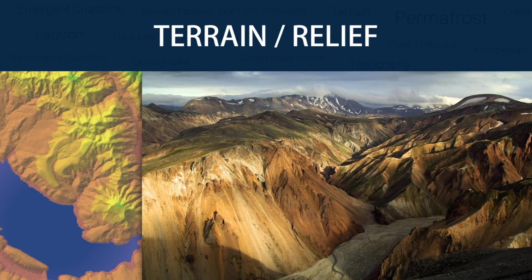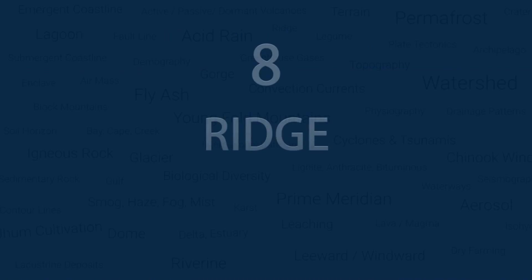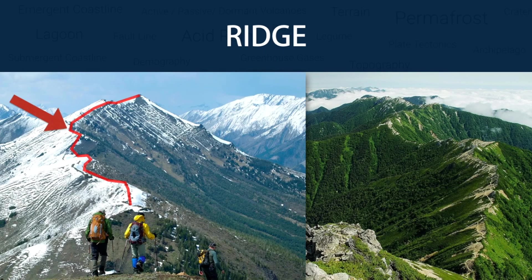Terrain, or relief, involves the vertical and horizontal dimensions of land surface. In physical geography, terrain is the lay of the land. This is usually expressed in terms of the elevation, slope and orientation of land features. A ridge, also known as a mountain ridge, is a geological feature consisting of a chain of mountains or hills that form a continuous elevated crest for some distance. Ridges are usually termed hills or mountains as well, depending on their size.